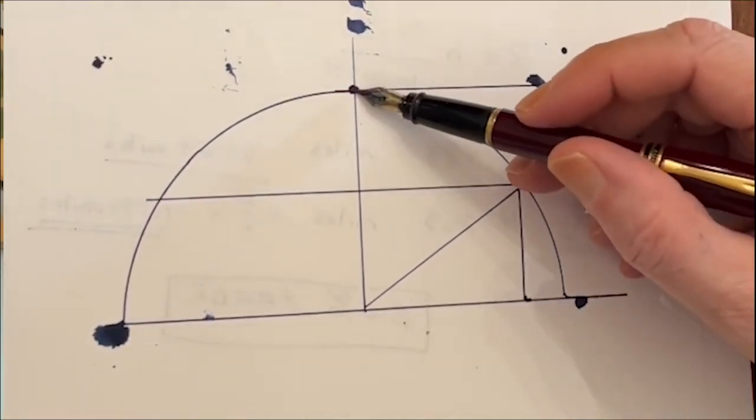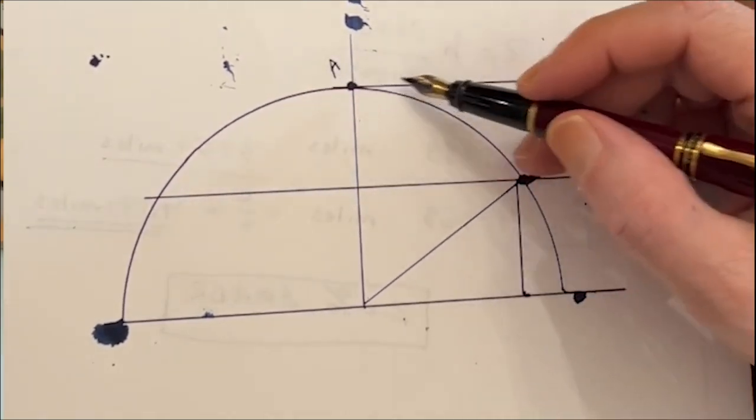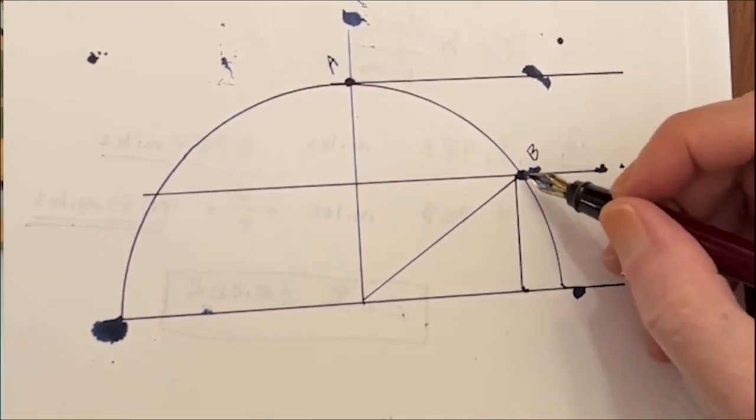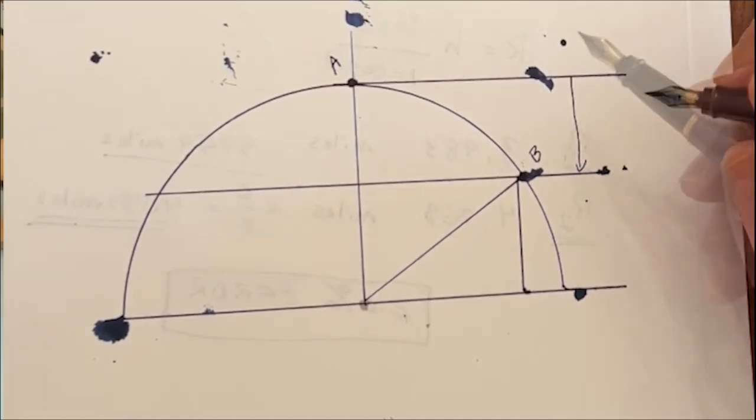Say that you are on the surface of a sphere at this point right here, we'll call this point A. And you want to find the drop in earth curve to another point, we'll call it B, that's over here. And what you're trying to solve for is that drop. Well how do we do that?